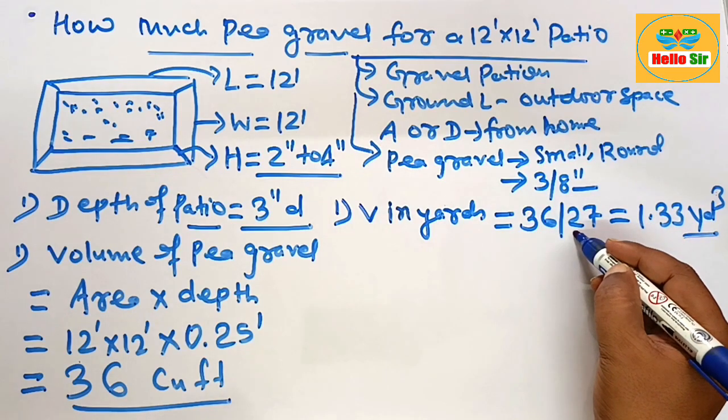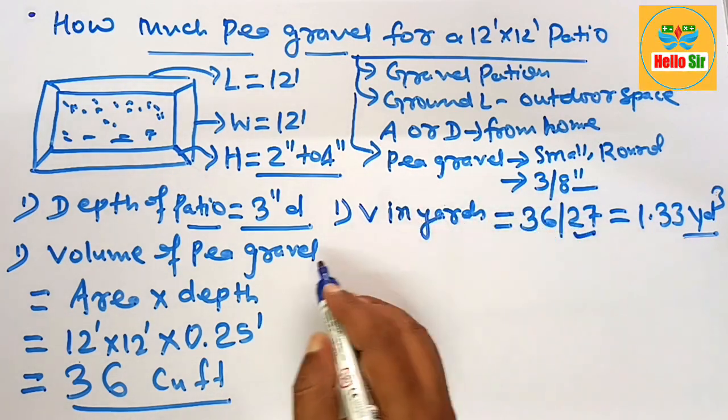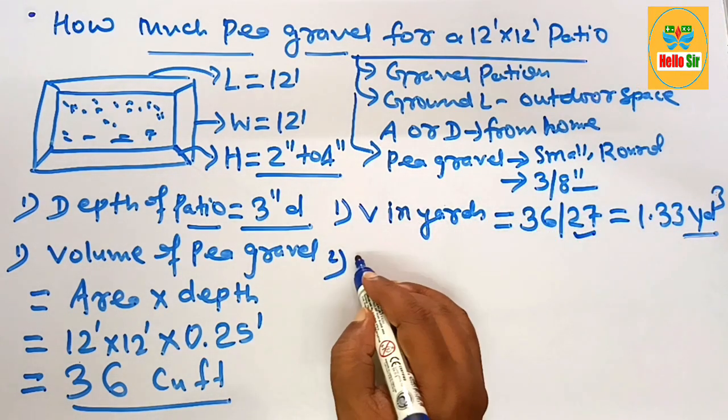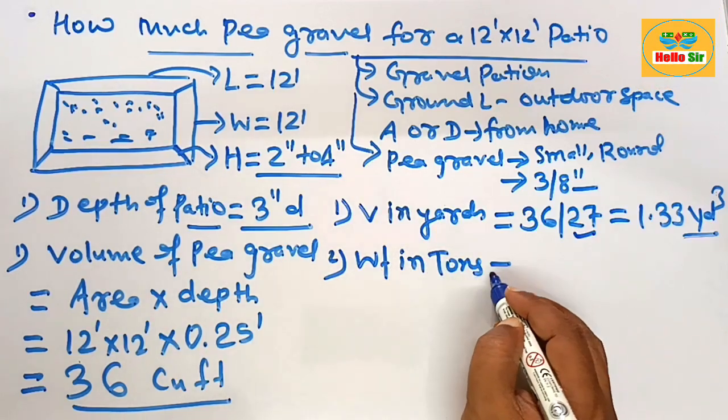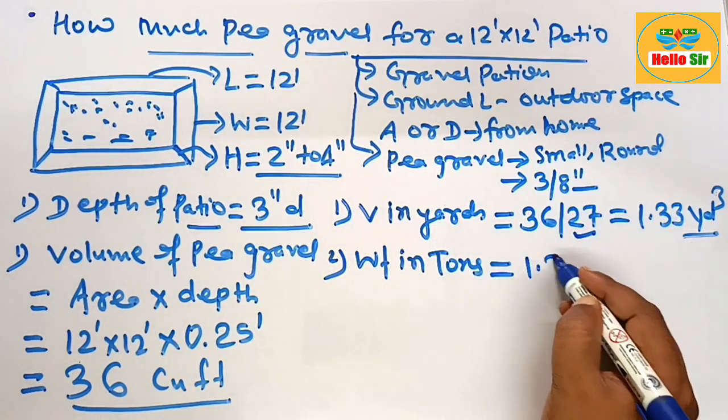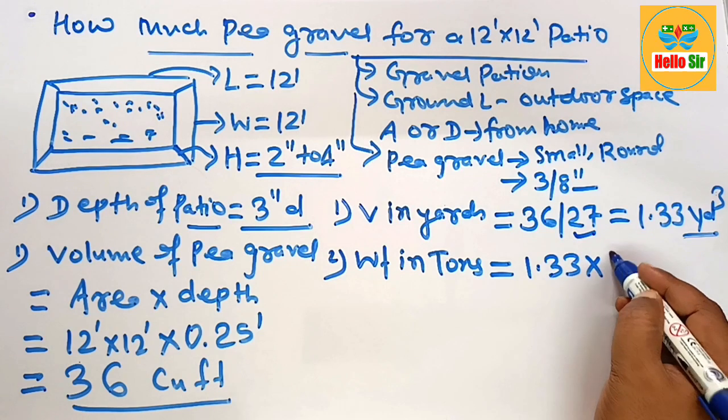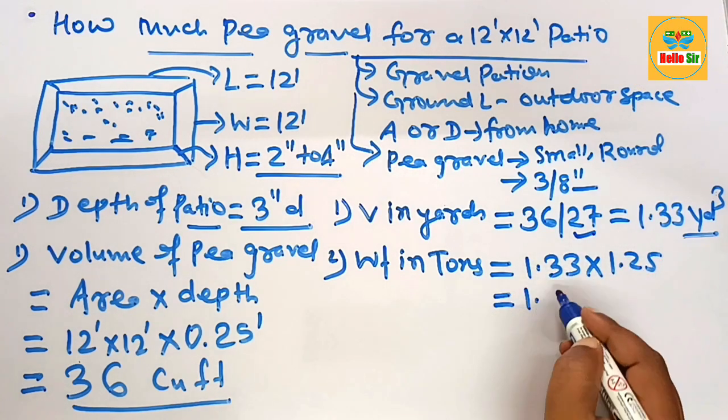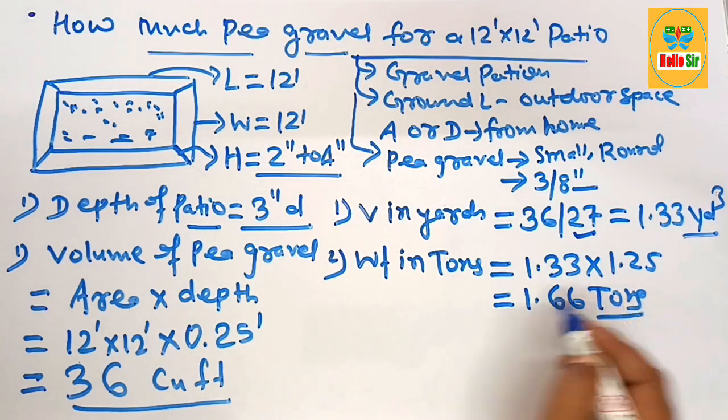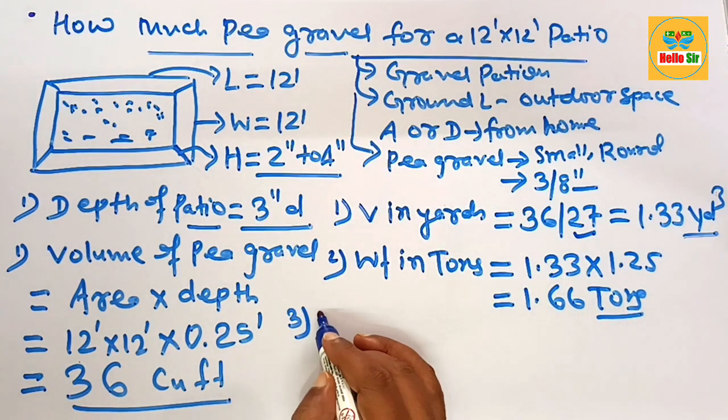And now calculate the weight in tons, how we calculate in tons? The cubic yard that is 1.33 multiply by 1.25, this will come about 1.66 tons.